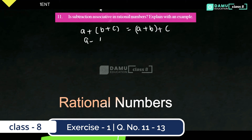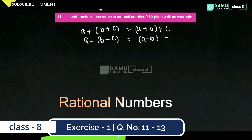In subtraction, A minus (B minus C) — we associate the second two — and (A minus B) minus C — we associate the first two. Like this.